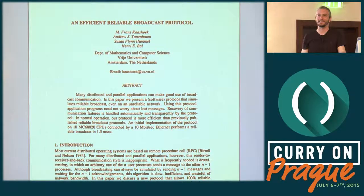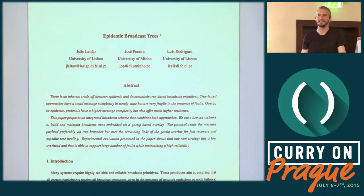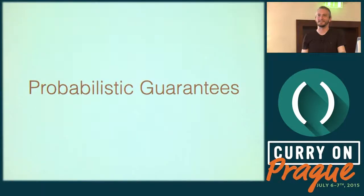That eventually led us to gossip protocols — things like Plumtree and Sprinkle. The main difference from the reliable broadcast papers we'd been looking at is that gossip protocols are designed to be much more scalable — tens of thousands of servers, hundreds of thousands of messages per second. Research on gossip protocols is still continuing to this day. To get this higher scale, these systems usually provide probabilistic guarantees rather than strong guarantees that a message will be delivered to all servers.